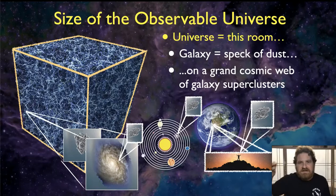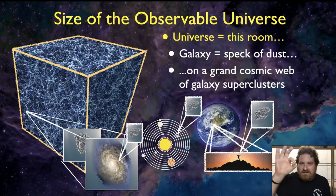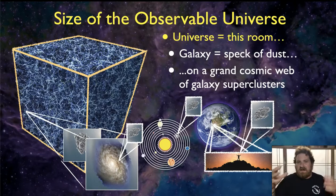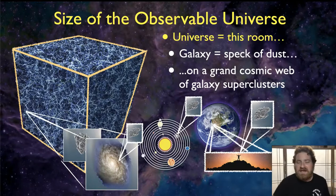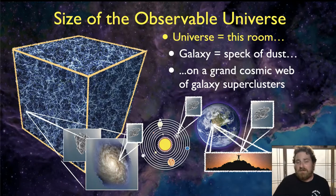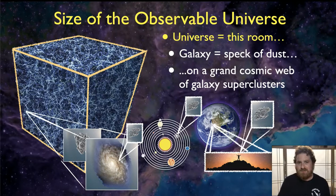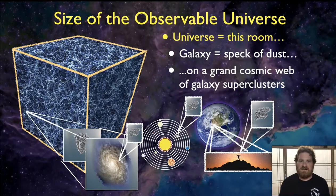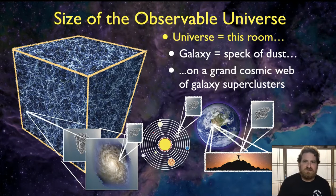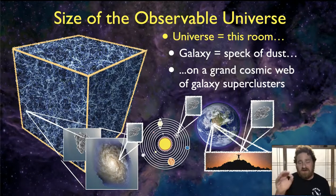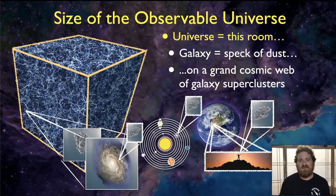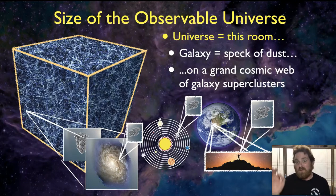And on every strand of cobweb, there would be a sprinkling of dust. And each of those grains of dust on every strand of that cobweb filling the whole room, each of those grains of dust would now represent an entire galaxy. So again, when the observable universe is the size of this room, our galaxy is a speck of dust. When that galaxy is the size of this room, our solar system is a speck of dust. And when the solar system is the size of this room, the Earth is a speck of dust. And when the Earth is the size of this room, we're a speck of dust.